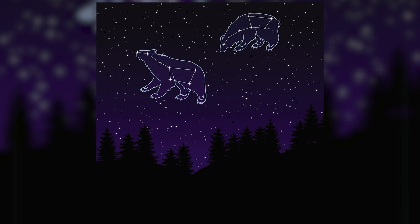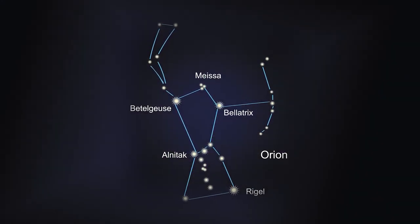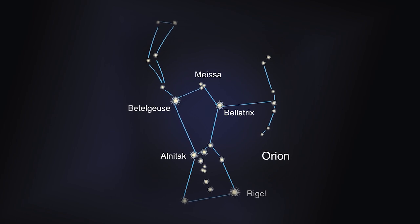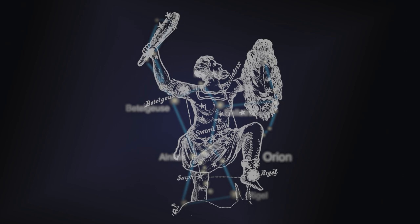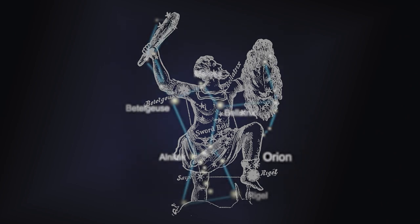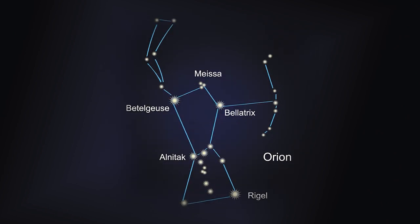Let's take a look at another constellation. This is the constellation Orion, named after the famous character from Greek mythology, Orion the Hunter. According to myth, Orion was the greatest hunter in all the land and was placed in the sky as a constellation as a way to honor his hunting prowess. Orion contains two very prominent stars, Betelgeuse and Rigel. It is most often recognized by its very bright and visible three-star section in the middle, known as Orion's Belt.